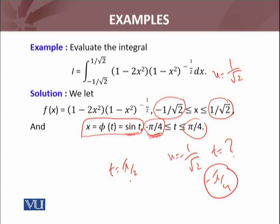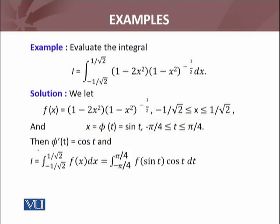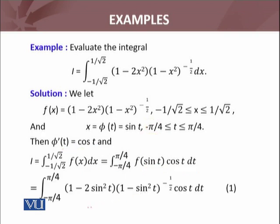My integral, by using the result we have just proved — phi dash of t, which is cosine of t — transforms. So this integral from the lower limit minus 1 over square root of 2 to upper limit 1 over square root of 2 of f of x dx becomes the integral from minus pi by 4 to pi by 4 of f of sin(t) times cos(t) dt.